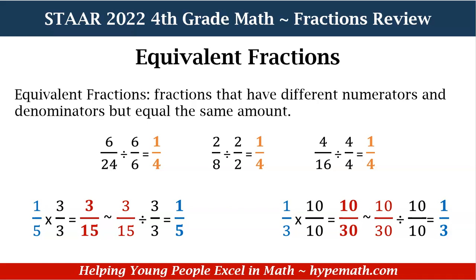Lastly, we have four over sixteen divided by four over four. No matter what number you choose, as long as you multiply or divide with the new number being the same in the numerator and denominator — four divided by four is equal to one, sixteen divided by four is equal to four. On the bottom, all we did was show how we can multiply and then divide, and it will equal the same amount. So one-fifth times three over three is equal to three over fifteen. In the same way, three over fifteen divided by three over three is equal to one-fifth. Next, one-third times ten over ten is equal to ten over thirty, and ten over thirty divided by ten over ten is equal to one-third.